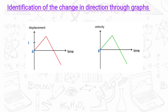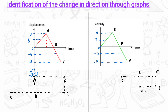I have given some random values so that it is easy to understand. When time equals 0, the displacement is 0 — the object is at point O. From O to A, the displacement increases. Let's say this is the positive direction; in the positive direction, the displacement will increase.